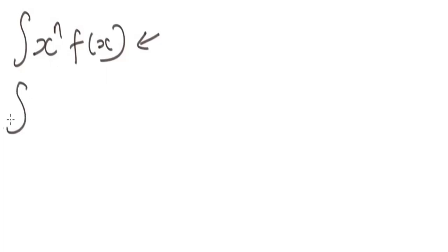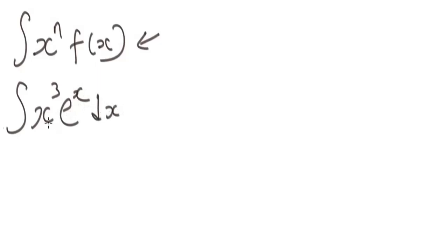We are given this integral: x³ times eˣ dx, and we're asked to integrate this function. With the shortcut trick, you firstly differentiate the polynomial function and then integrate the exponential function. Let's begin with the polynomial function — you start by writing the original function.